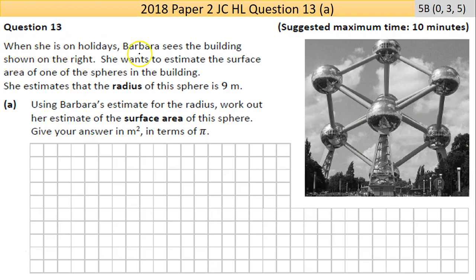Question 13: When she is on holidays, Barbara sees the building shown on the right. She wants to estimate the surface area of one of the spheres in the building. She estimates that the radius of this sphere is 9 meters.